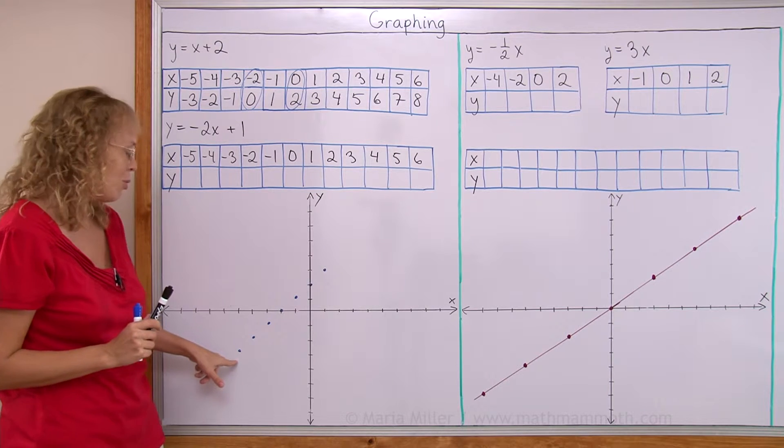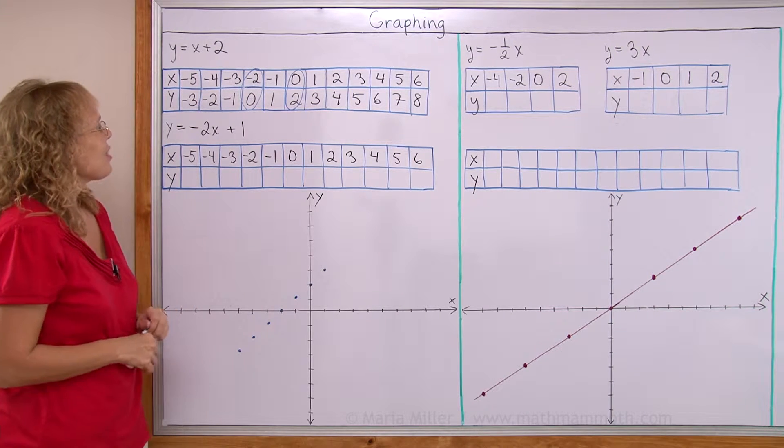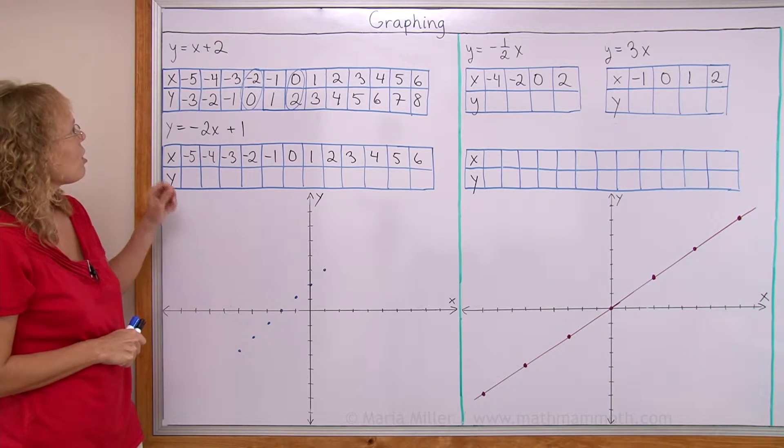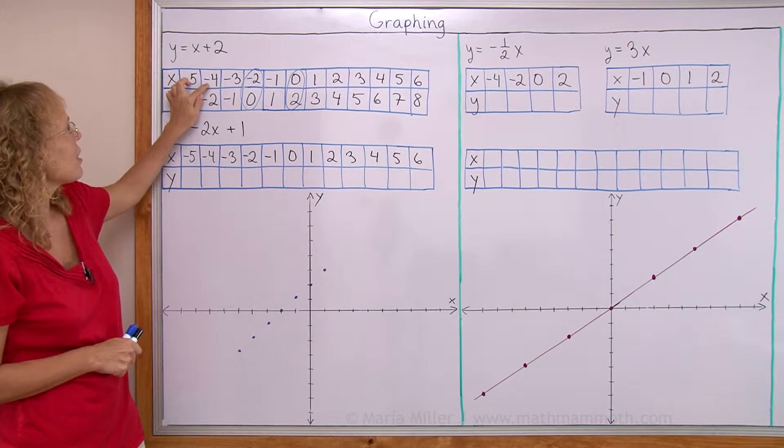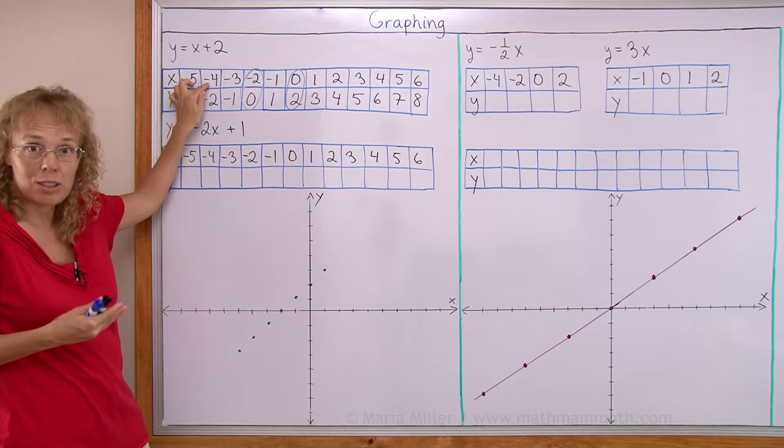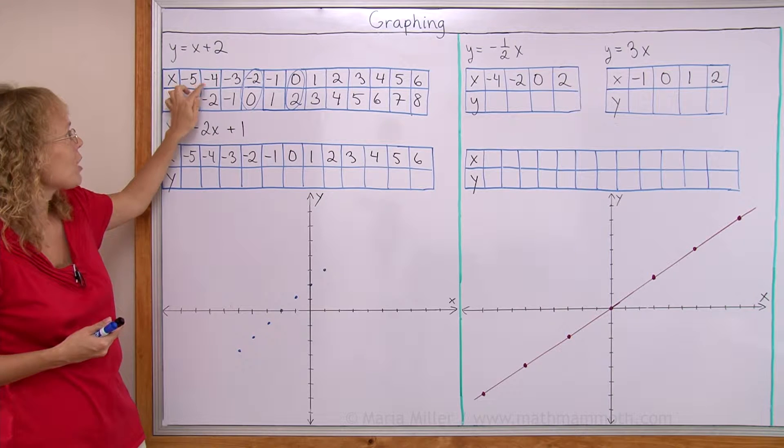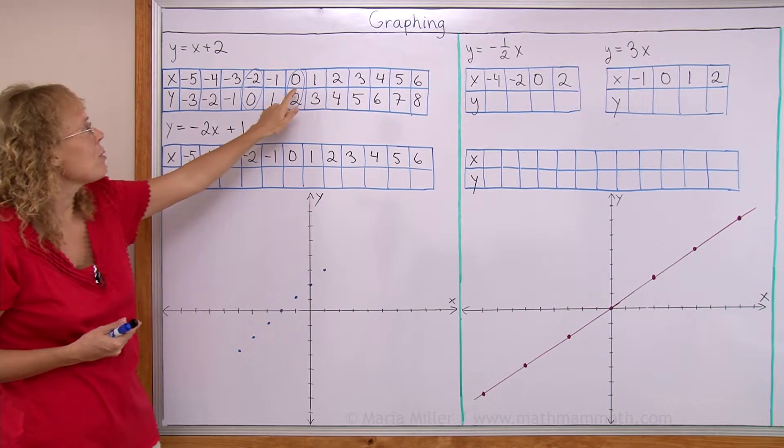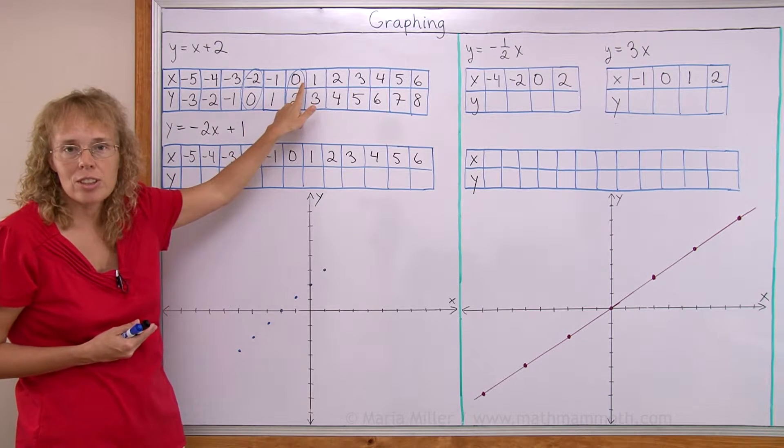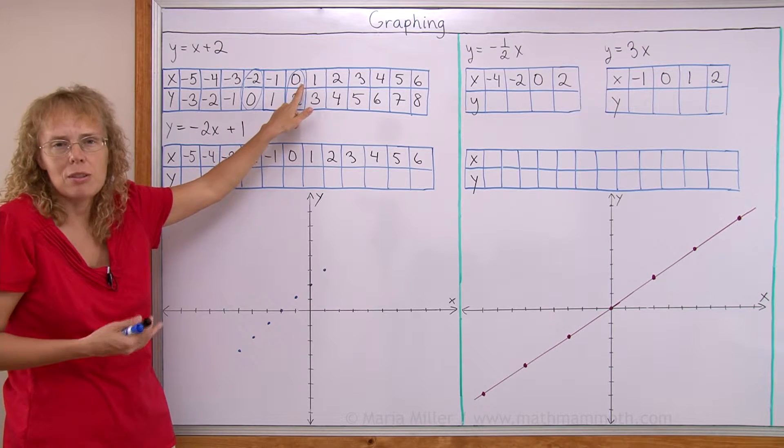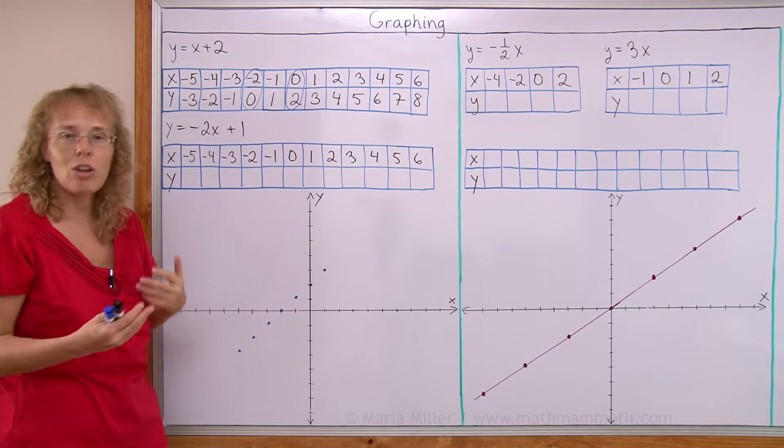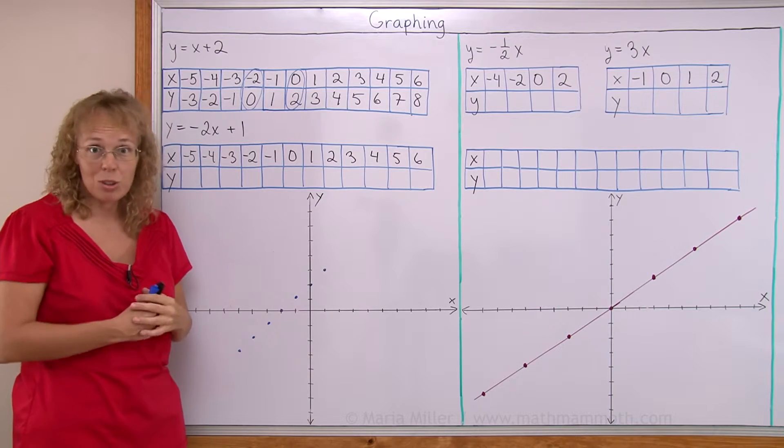But I'm not going to plot them all this time because I'm going to actually draw a line. To draw a line, I only would need two points, actually. The reason I'm going to draw a line is because even between negative 5 and negative 4, there are possible values for x. There's fractions and decimals between these two. Or between 0 and 1, there's all kinds of fractions that x could be. X could be 1 half or 1 third, 1 fourth, whatever.